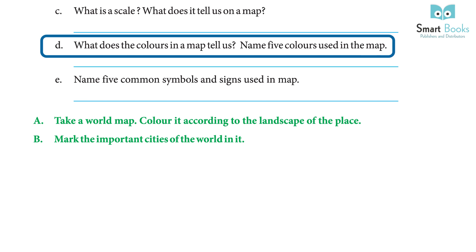Question: What does color in a map tell us? Name five colors used in the map. Answer: Colors are a very important component of the map — they tell us about the unevenness of the land. Green shows lowland; yellow shows plains; brown shows highlands; blue shows water bodies.